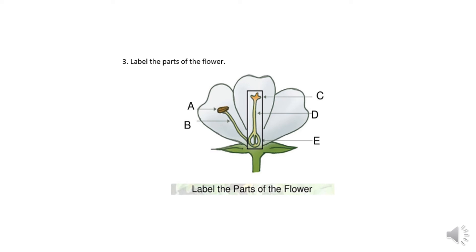Part E is the colored leaves, which are the colored part of the flower, and these are called petals. Below the petals there are green leaves which are not labeled in the diagram, and they are called sepals. So A and B are the stamen, C and D make the carpel, E is the petal, and below the petals are the green leaves called sepals.